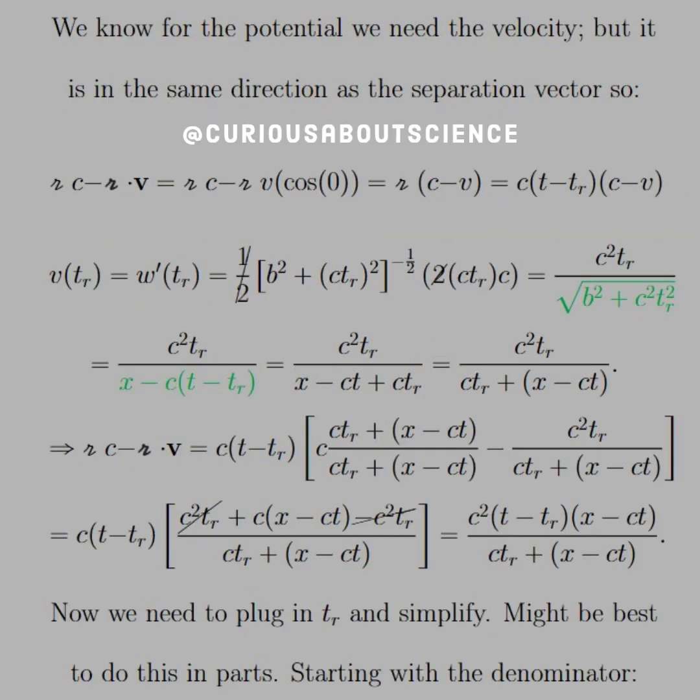So we know for the potential we need the velocity, but it is in the same direction as the separation vector. So we have script R·C minus boldface R dot V. Again, same direction. So that dot product goes to magnitude R, magnitude V, cosine of 0, which is 1, easy enough, no big deal. So what we get is script R(C minus V), which script R we know is C times T minus T_R. We already know what T_R is. We already know everything else we need to.